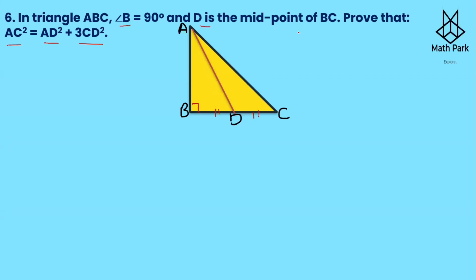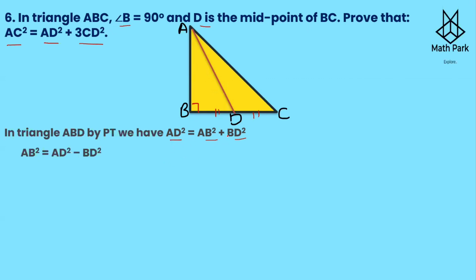We are given right triangle ABC with right angle at B, and D is the midpoint of BC. In triangle ABD, by Pythagoras theorem, AD is the hypotenuse, so AD² = AB² + BD². Rearranging, AB² = AD² − BD². Since D is the midpoint, BD = CD, so AB² = AD² − CD². This is equation number one.